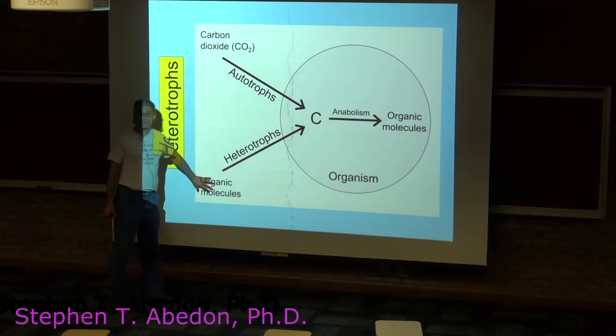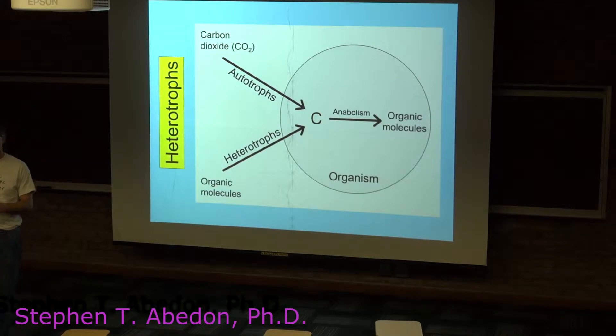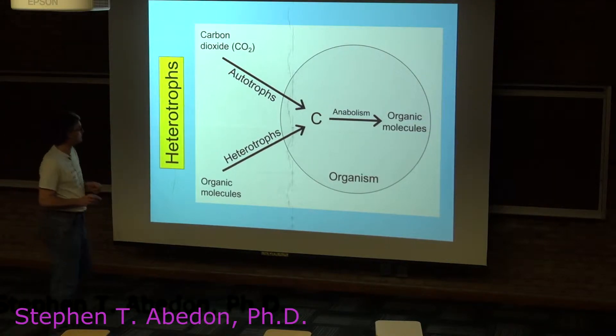So these are descriptions of where these organisms get their carbon from, specifically their organic carbon, the carbon that makes up their bodies. It makes up proteins, carbohydrates, fats, and so on.